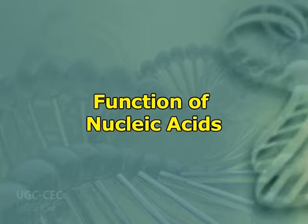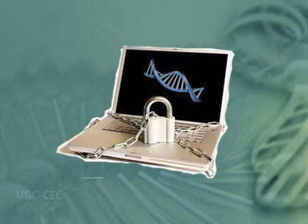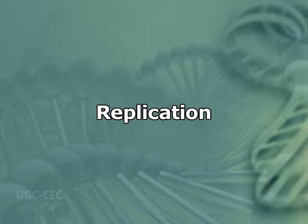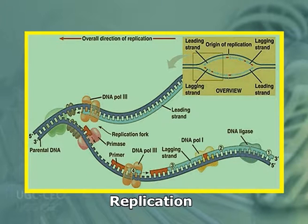Now, we discuss the functions of nucleic acids. The effective storage, expression, and reproduction of the genetic message characterize individual species, discriminate them from one another, and assure their stability over successive generations. Because DNA is the repository of genetic information in each living cell, its integrity and stability are significant to life. The main function of nucleic acid is to store and transmit genetic information. The structure of DNA allows for its replication and repair with near-perfect fidelity.